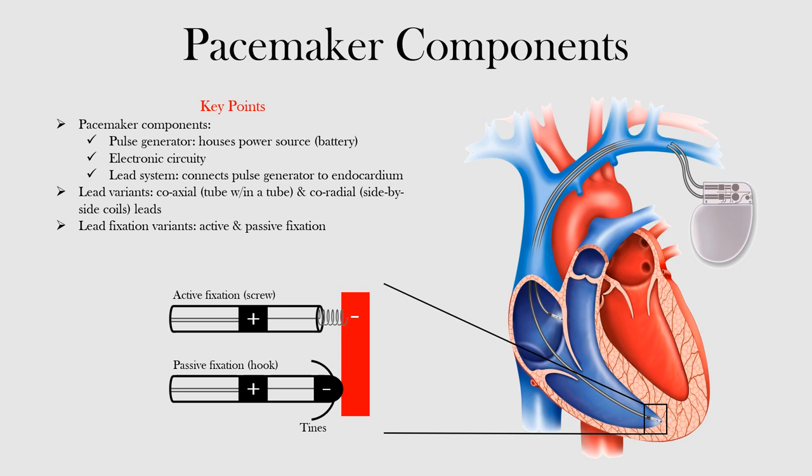In the rest of this lecture we will focus on the components and some variations of artificial pacemakers. In general, pacemakers consist of a pulse generator or can, which contains the electronics, battery, and the leads.